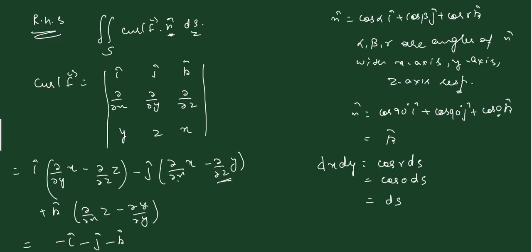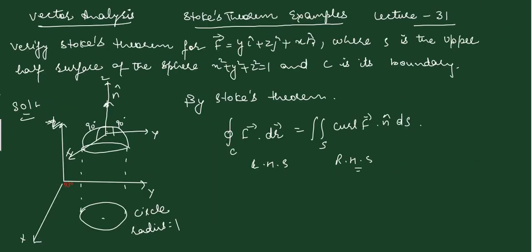Left hand side value is minus pi and right hand side value is minus pi. So we have verified Stokes theorem: left hand side equals right hand side. Students, you can understand this question. Thank you.